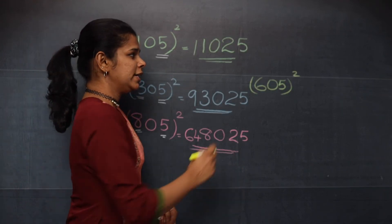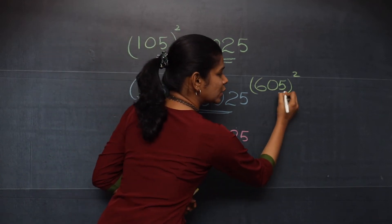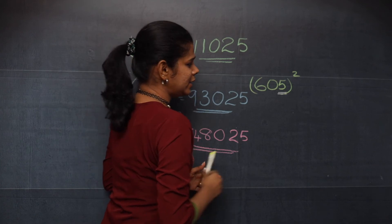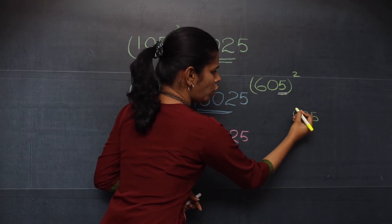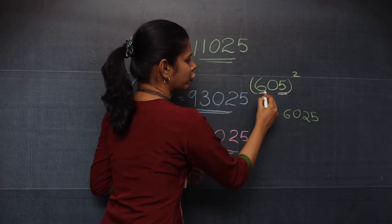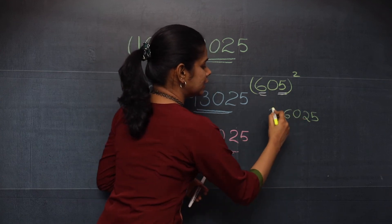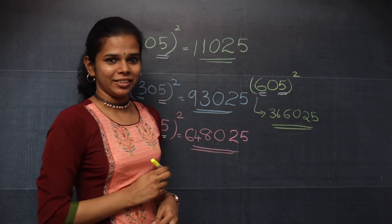Now let's see one more. 605, the whole square. So you will find the square of 5, that is 25. After that you have 0, then 6 and then the square of 6, that is 36. So this becomes your answer. I hope this trick was useful for everyone.